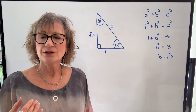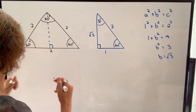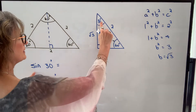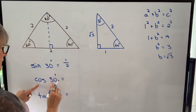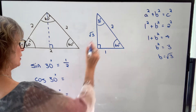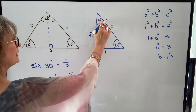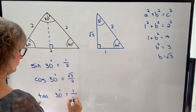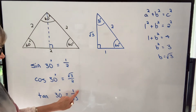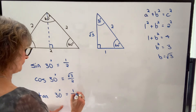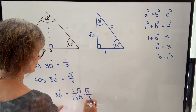Now we can find our three main trig functions for 30 degrees and for 60 degrees. Sine of 30 degrees is opposite over hypotenuse, so one over two. Cosine of 30 degrees is adjacent over hypotenuse, so root three over two. Tangent of 30 degrees is opposite over adjacent, so one over root three. We rationalize the denominator by multiplying numerator and denominator by root three, giving us root three over root nine, which is root three over three.